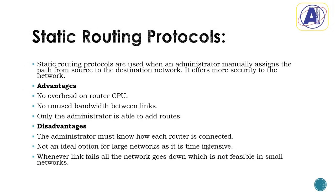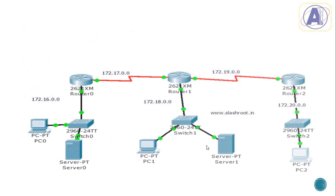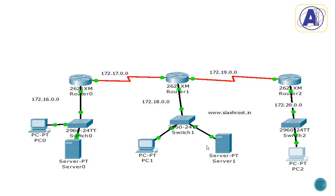Static routing protocol is used when an administrator manually assigns the path from source to destination network. It offers more security to the network. The advantage is no overhead on the router CPU, no unused bandwidth between links, and only the administrator is able to add routes. The disadvantage is that the admin must know how each router is connected — it's not ideal for a large network as it is time-intensive, and whenever a link fails the whole network goes down. I'll show you how this looks in Packet Tracer.